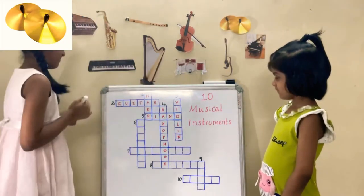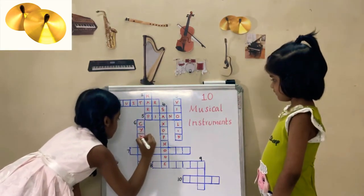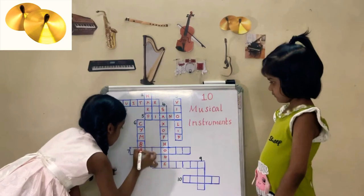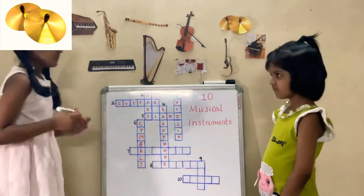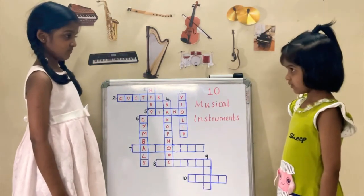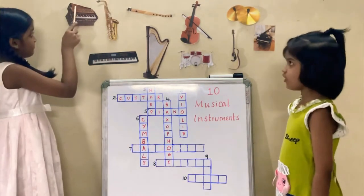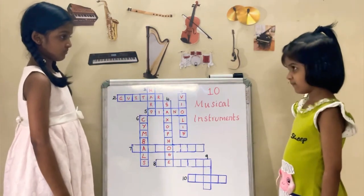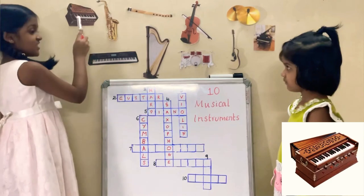Yes, it is cymbals. So the sixth instrument is cymbals. Can you guess the name of the seventh instrument? Yes, it's harmonium.